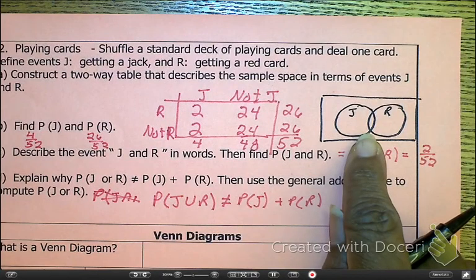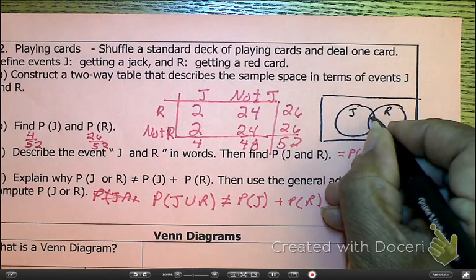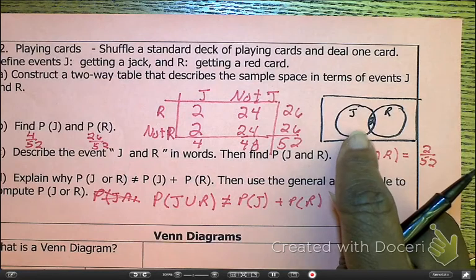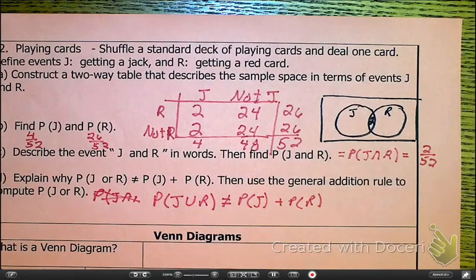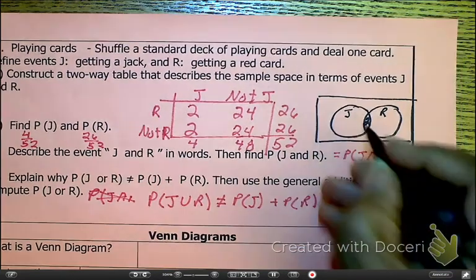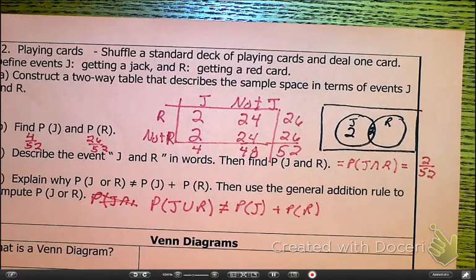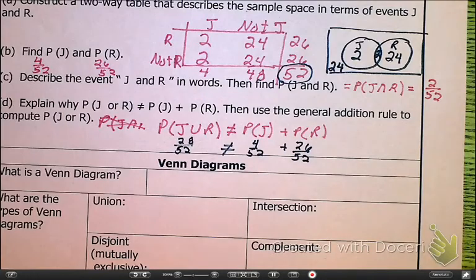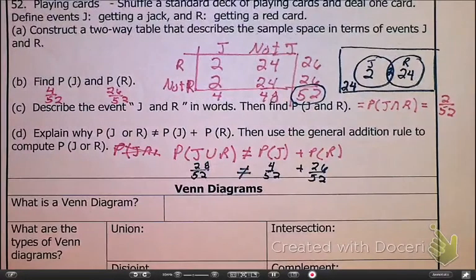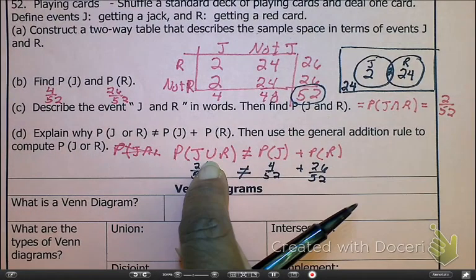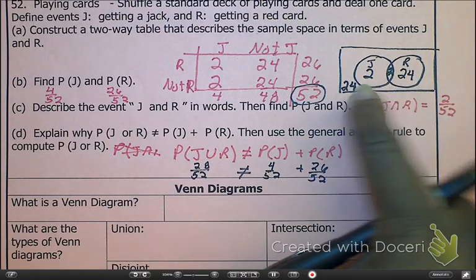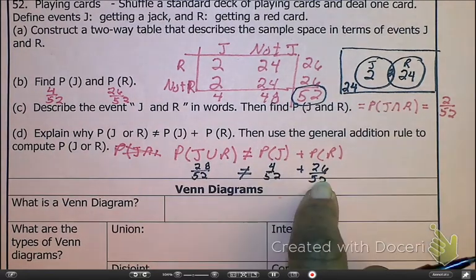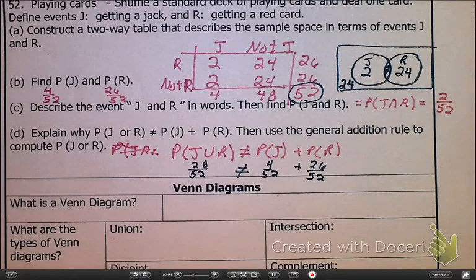We don't have to use that formula because we have a nice two-way table. So, this is going to be just, as you guys, I'm sure, already found out, 2 over 52. Now, our next question is, we need to explain why these are not equal. We need to explain why the probability of Jack or red, which is written like this, how that is not equal to the probability of Jack plus the probability of red. Okay. So, the probability of Jack or red. I want to do a Venn diagram. Because with the Venn, it's going to be a lot easier to see. So, even though we haven't talked about Venn's, which we will be in a few minutes, let's just jump ahead.